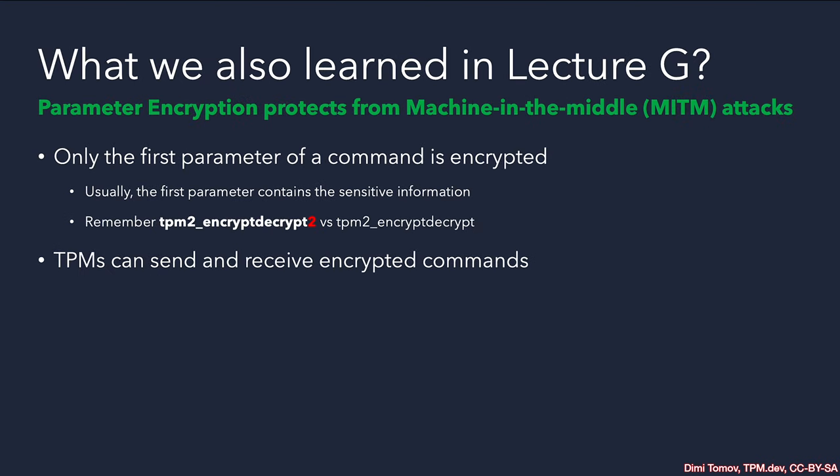Going back to what we know about parameter encryption: this feature enables the TPM to protect the very first parameter of a command that supports parameter encryption. Why don't all commands support it? Because not every command has sensitive information. In some cases, it might be only the command itself we are requesting from the TPM, or it is only the response that contains sensitive information — for example, when reading an NV index.